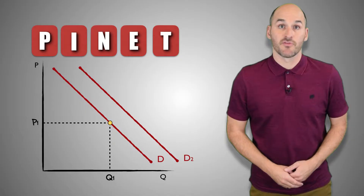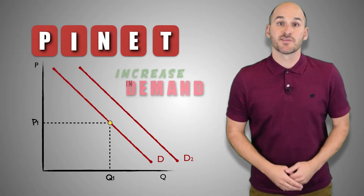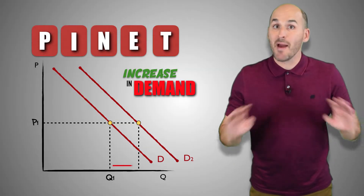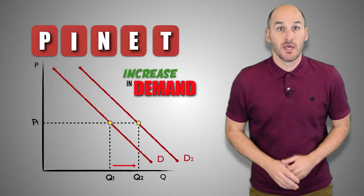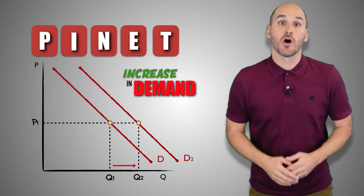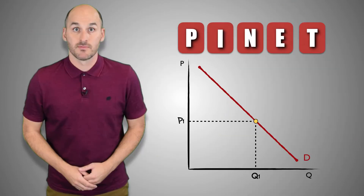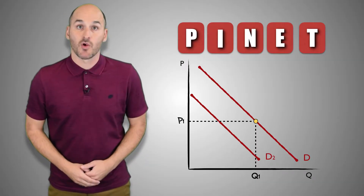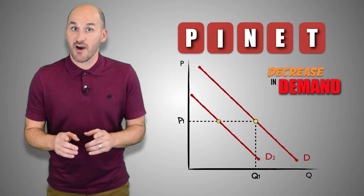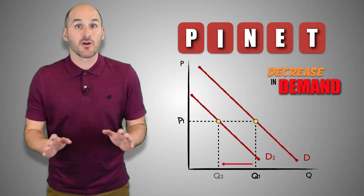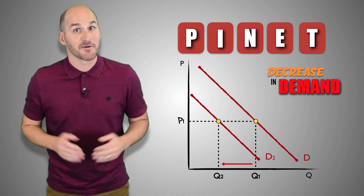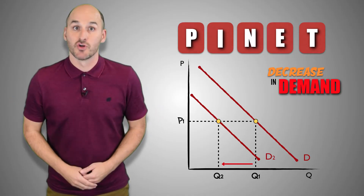A rightward shift of the demand curve indicates that demand has increased in the market, and a greater quantity of output is being consumed regardless of the price level — higher or lower prices, it doesn't matter, consumers are buying more. A leftward shift indicates that demand has decreased, and a lesser quantity of output is being consumed regardless of price level — higher or lower prices, it doesn't matter, consumers are buying less.